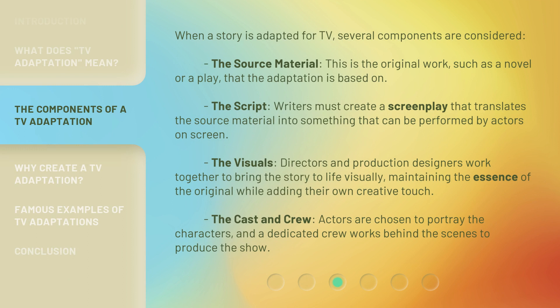When a story is adapted for TV, several components are considered. The source material — this is the original work, such as a novel or a play, that the adaptation is based on. The script — writers must create a screenplay that translates the source material into something that can be performed by actors on screen.